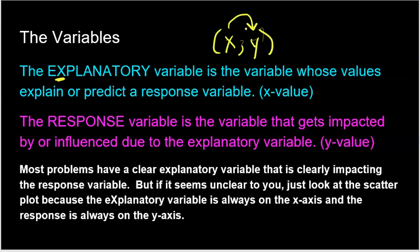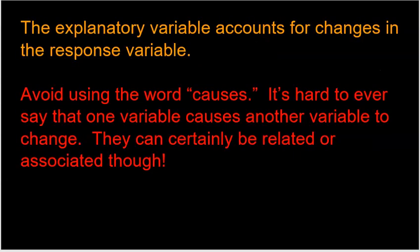So most problems have a clear explanatory variable that is clearly impacting the response variable. But if it seems unclear to you, just look at the scatter plot, right? Because the explanatory variable is always going to be on the X axis, and the response variable is always going to be on the Y axis. So even if just reading the two variables, you're like a little unsure which one's doing the explaining, which one's doing the responding, just look at your scatter plot, and you'll clearly see that the X axis has the explanatory variable. You can't mess that up. And the Y response variable is on the Y axis.